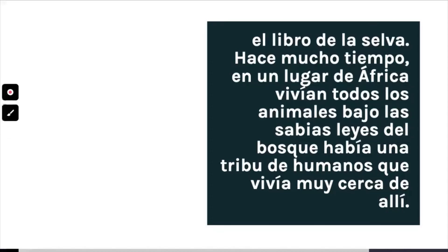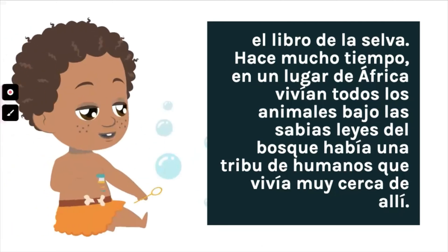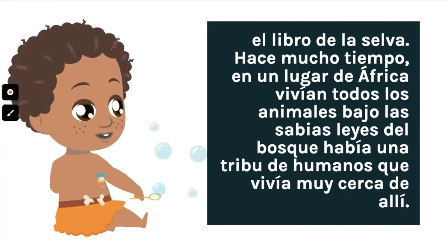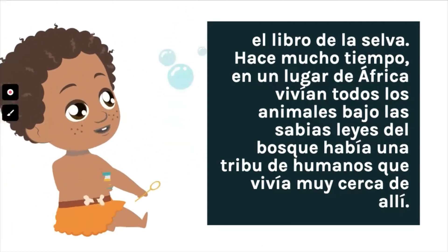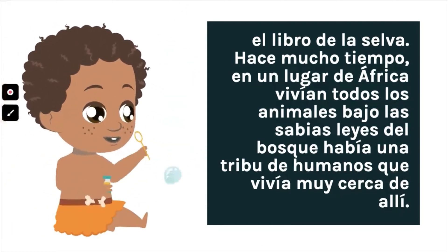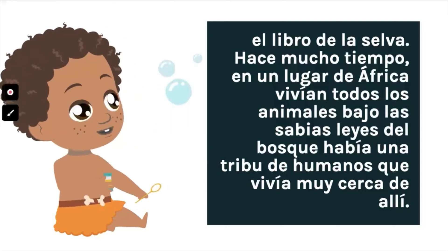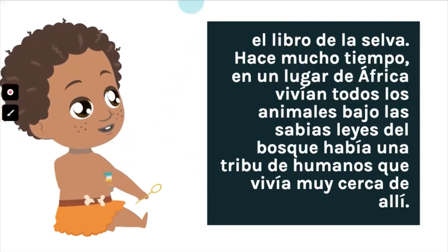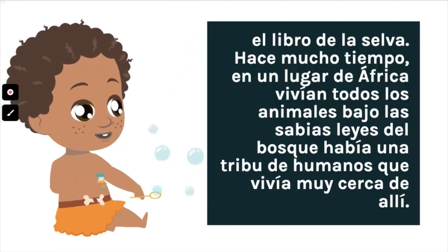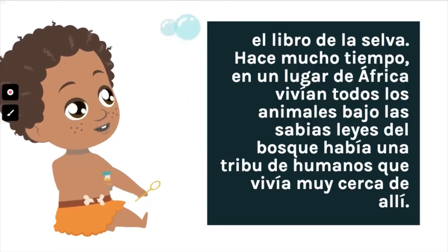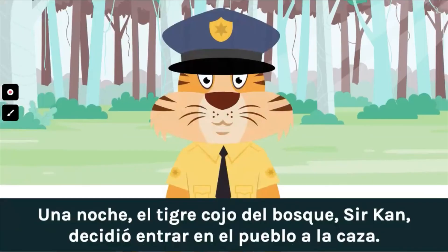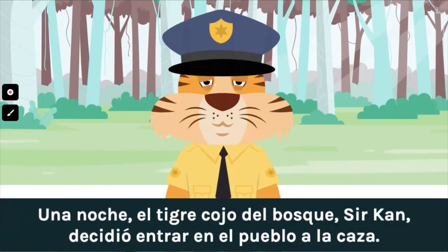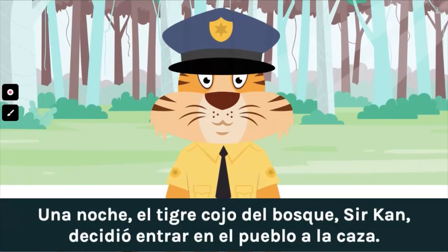El libro de la selva. Hace mucho tiempo, en un lugar de África, vivían todos los animales bajo las sabias leyes del bosque. Había una tribu de humanos que vivía muy cerca de allí. Una noche, el tigre cojo del bosque Shir Khan decidió entrar en el pueblo a cazar.